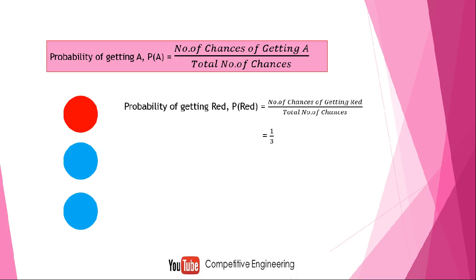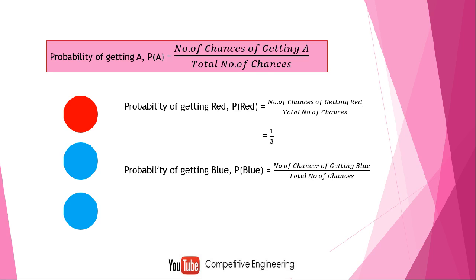This means that the probability of getting a red ball is one-third. Similarly, the probability of getting a blue ball: the total number of chances of getting blue is two, because when taking a ball it may be the middle blue ball or the bottom one — so there are two chances. The total number of chances is three, so the probability is 2/3.